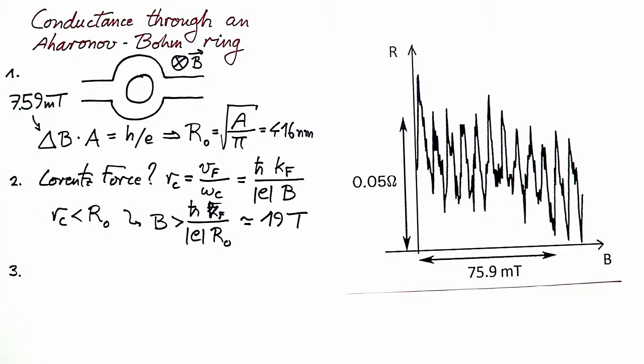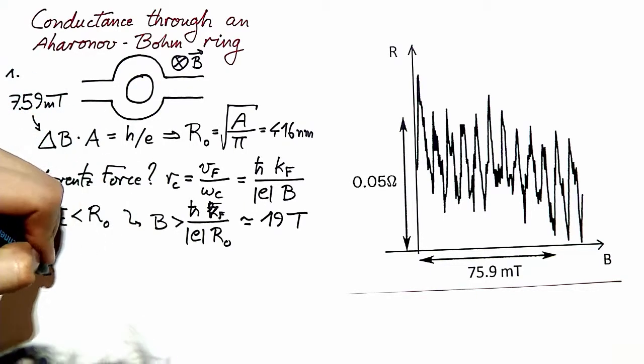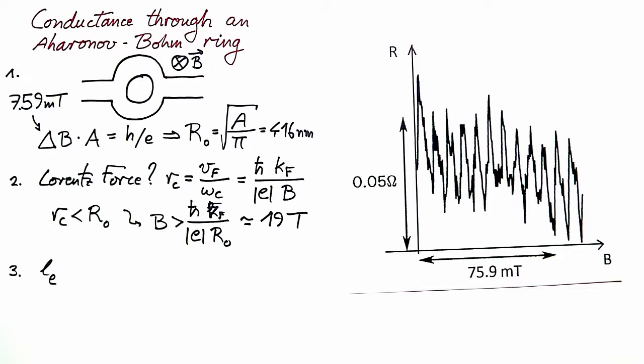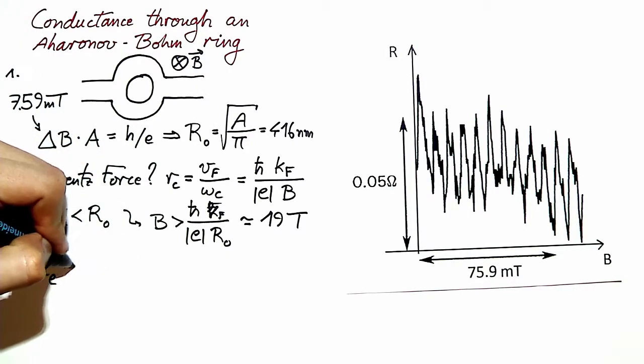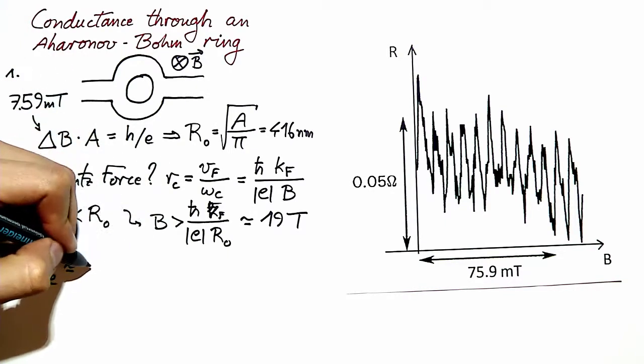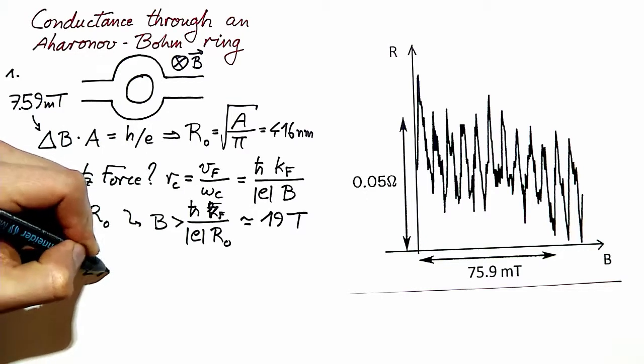The next question is whether transport in this ring is ballistic or diffusive. We are given an elastic mean free path, which is provided by the authors in a paper describing the fabrication techniques for the sample.